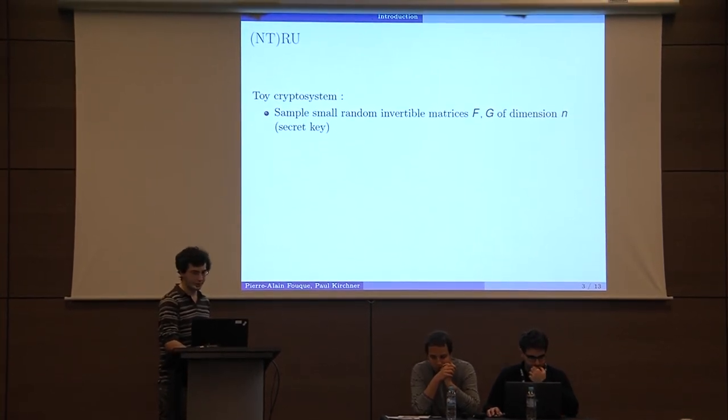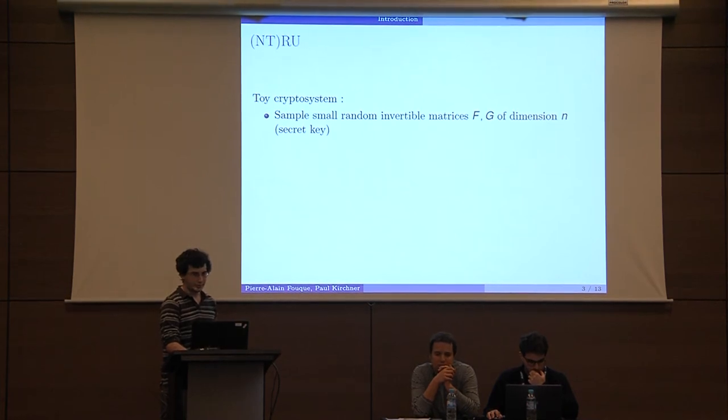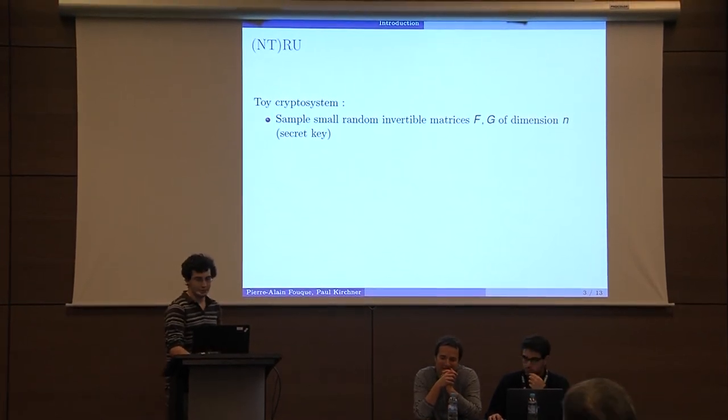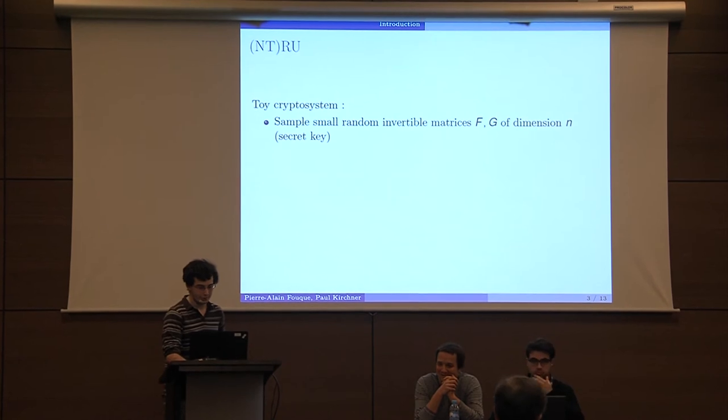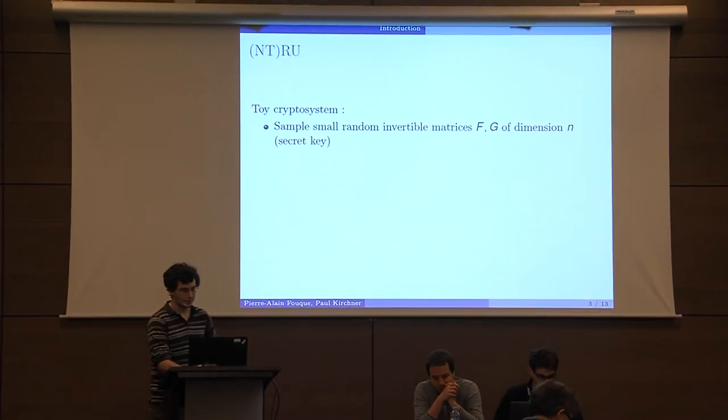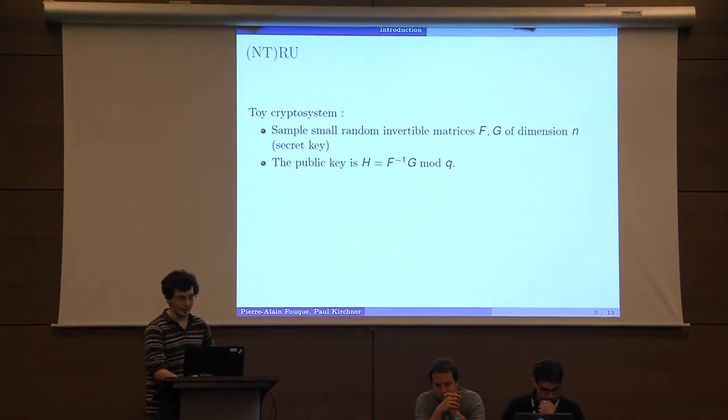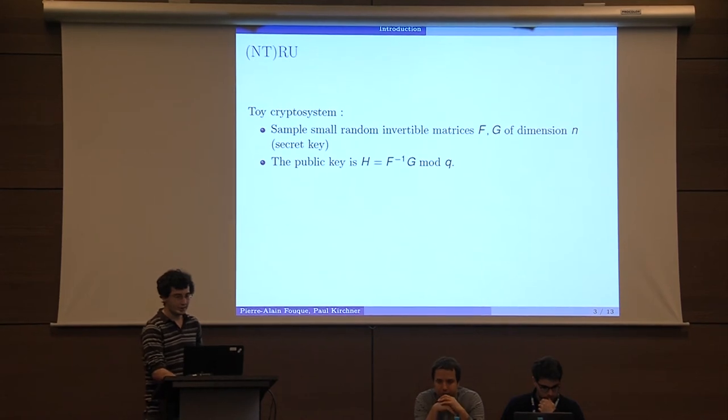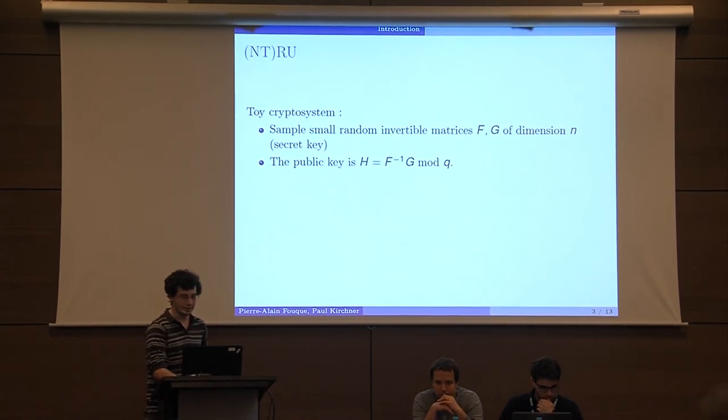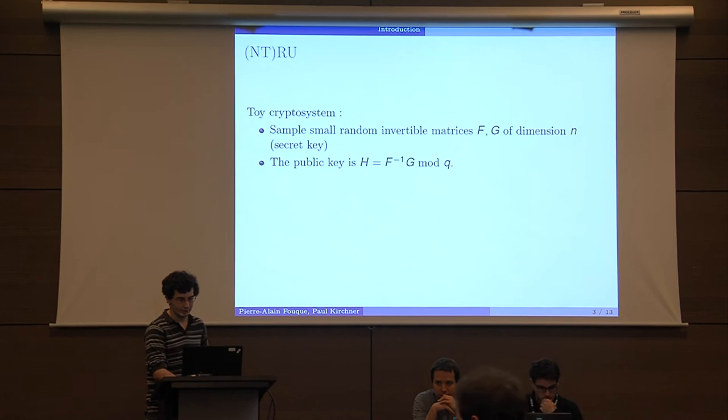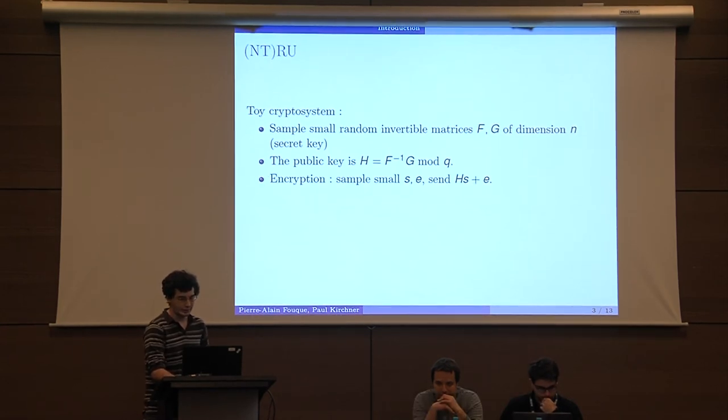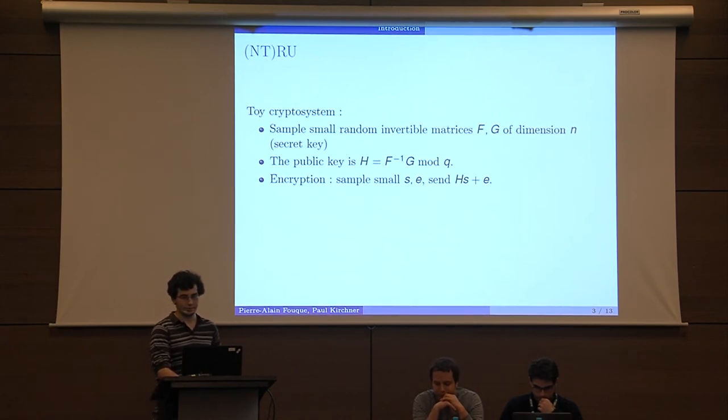First, the toy cryptosystem, NTRU without number theory. We sample some small random invertible matrices F and G of dimension n and it will be the secret key. The public key is H, which is the inverse of F times G mod Q, a small integer. If you want to encrypt, you sample some small vector s and e and you send H times s plus e, which is essentially an LWE cryptosystem.